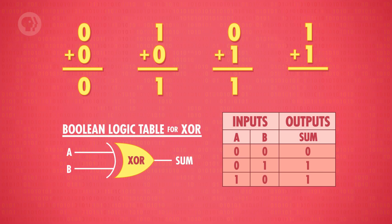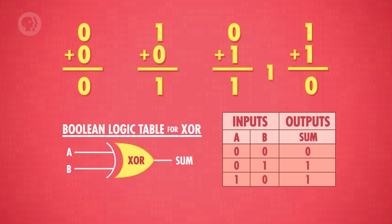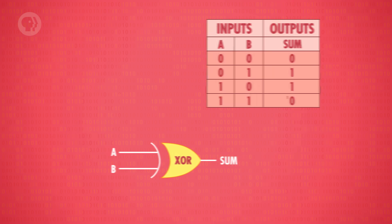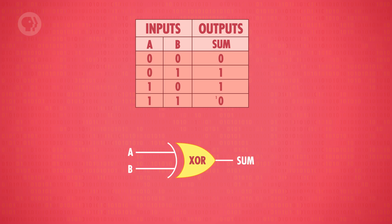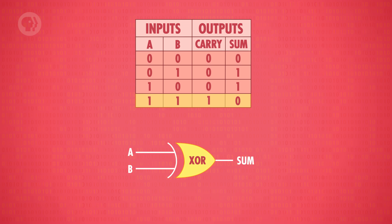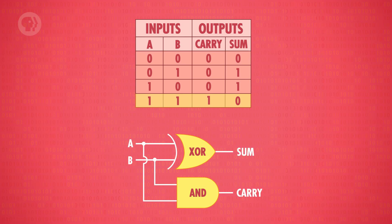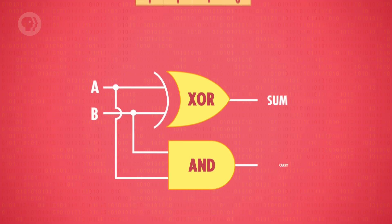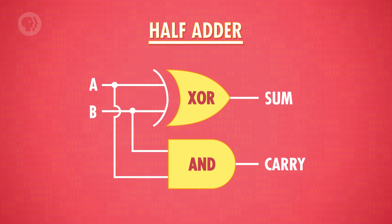But the fourth input combination, 1+1, is a special case. 1+1 is 2, obviously, but there's no 2-digit in binary. So the result is 0, and the 1 is carried to the next column — the sum is really 10 in binary. The output of our XOR gate is partially correct: 1+1 outputs 0. But we need an extra output wire for that carry bit. The carry bit is only true when both inputs are 1 AND 1, because that's the only time the result is bigger than 1 bit can store. Conveniently, we have a gate for that — an AND gate, which is only true when both inputs are true. This circuit is called a half adder. It's not that complicated, just two logic gates.